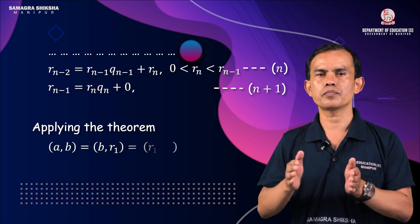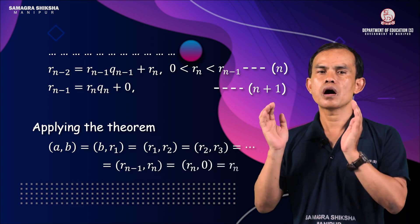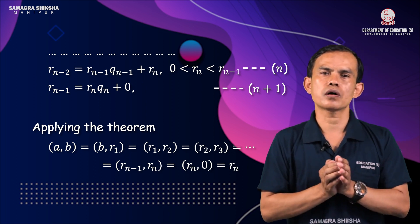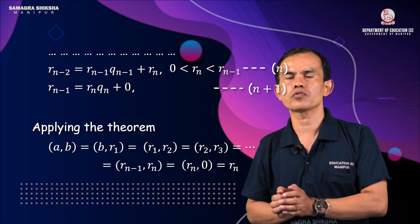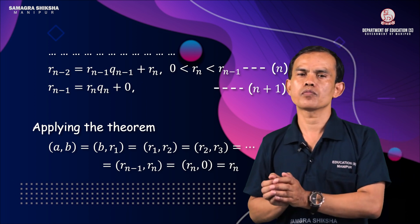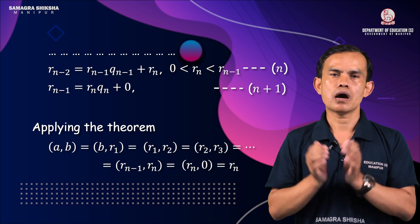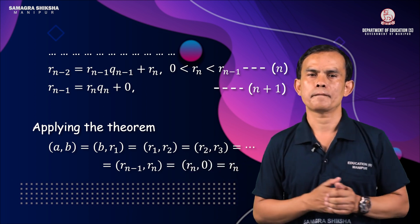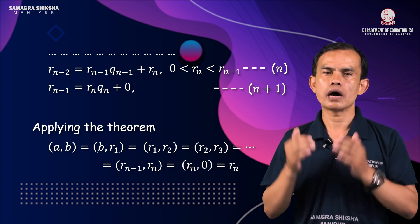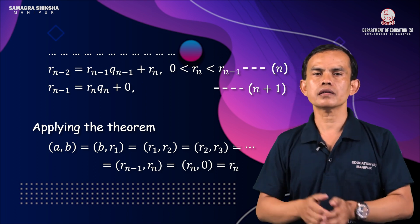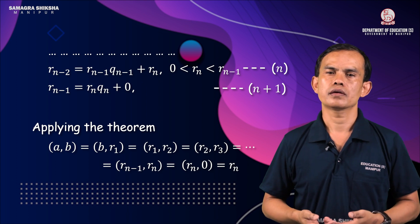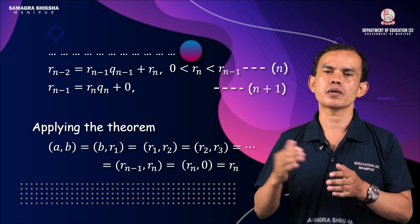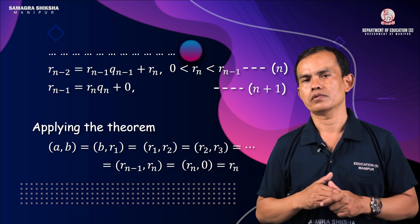The last non-zero remainder Rₙ is the HCF. Equation 1 involves a, b, and R₁; equation 2 involves b and R₁ giving R₂; and so on until the remainder becomes zero.